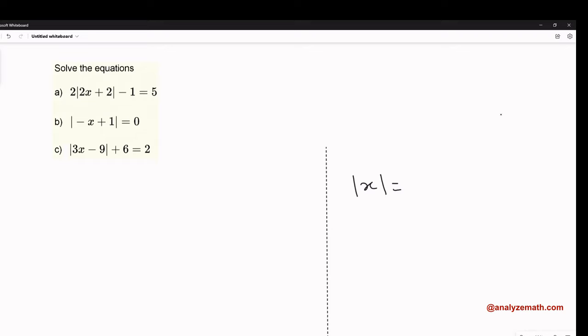The absolute value of x is the distance from 0 to x on the number line. The formal definition says that the absolute value of x is equal to x when x is positive or zero, and it's equal to negative x when x is less than zero.